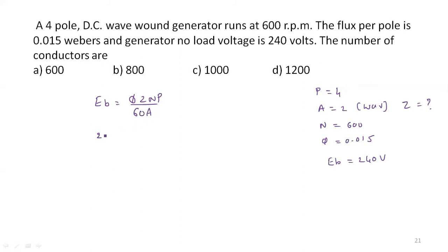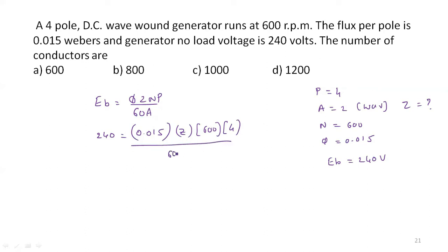Substituting: Eb = 240, φ = 0.015, Z is to be found, speed = 600 RPM, number of poles = 4, divided by 60 into A. For wave winding, number of parallel paths equals 2. Solving for Z, Z equals 800.